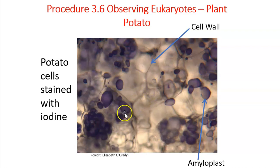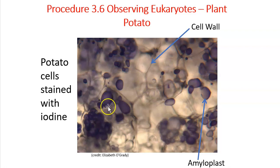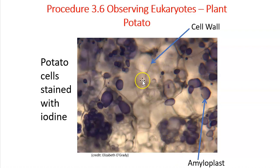We see these little purple structures. Those purple structures are a special type of plastid called an amyloplast. Remember, plastids are special organelles that ultimately are going to store things like carbohydrates. Chloroplasts are a plastid, and amyloplasts are also a plastid. These amyloplasts are going to store large amounts of starch. The potato is primarily the energy storage part of the plant. You can see that there are lots and lots of these little amyloplasts within each cell, with each cell separated by a translucent line — the plant's cell wall.